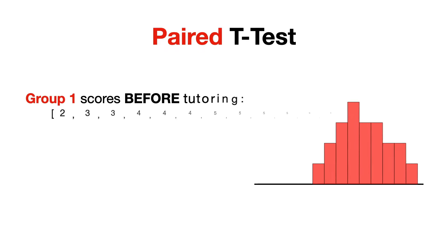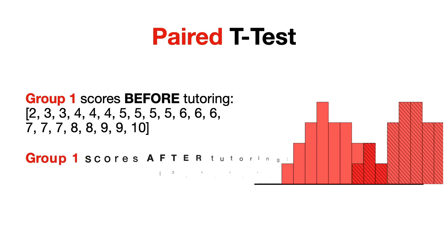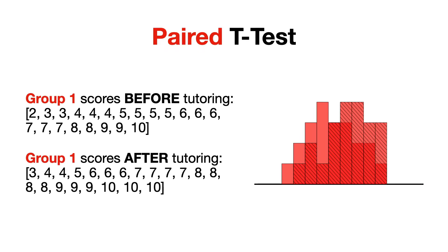Now let's move on and see what would happen in a different scenario, where instead of looking at the scores of two different groups of students, we look at the same group of students before and after extra tutoring. This is where we would use a paired t-test, also known as a dependent t-test, which is designed for situations where the same subjects are measured twice — once before and once after an intervention — allowing us to determine if there is a significant change in their performance.